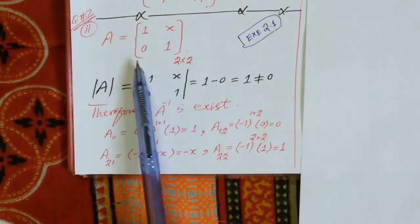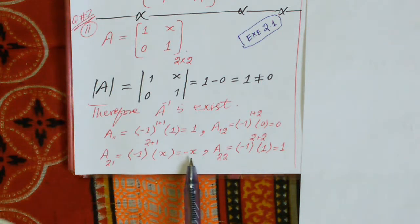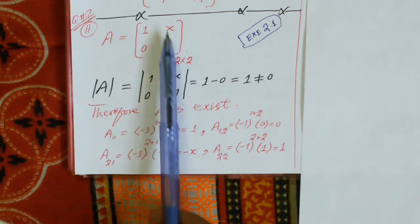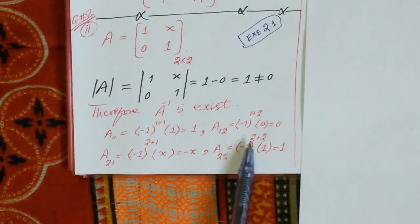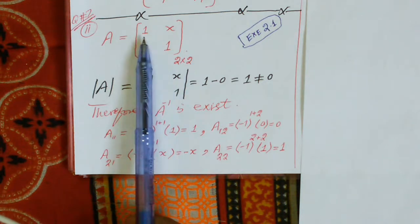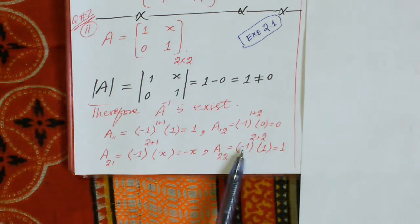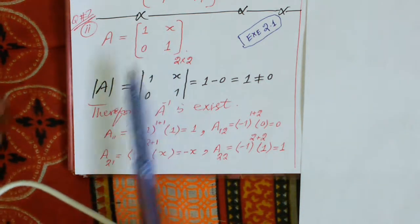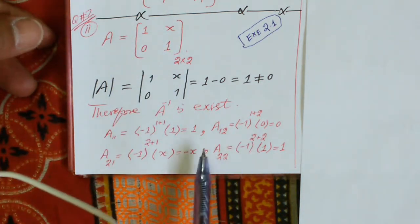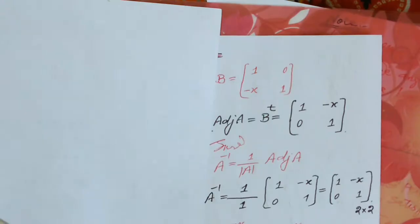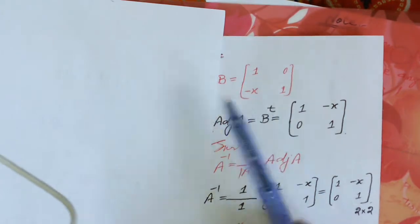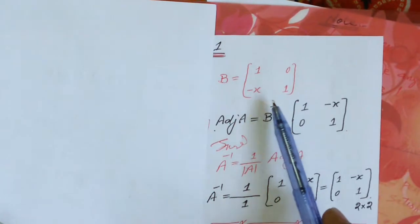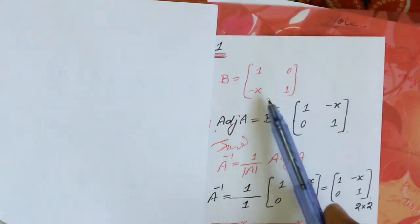Deleting the first row and second column, the cofactor of the second row and first column equals -1 times the minor. For the second row and second column, (-1) raised to the power 2+2 times the minor obtained by deleting the second row and second column gives 1, multiplied by 1 equals 1. Now replace each element of matrix A by its cofactor, giving the cofactor matrix with elements 1, 0, -1, 1.